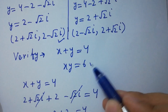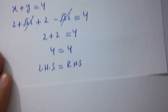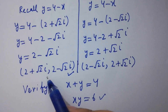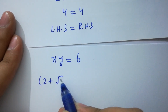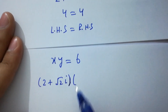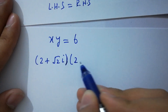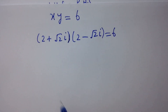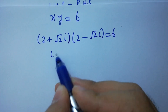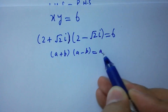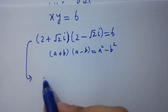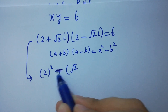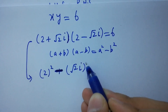Now verifying x times y equals 6: x times y equals (2 plus square root of 2i)(2 minus square root of 2i). This is of the form (a plus b)(a minus b) equals a squared minus b squared. So we have 2 squared minus (square root of 2i) squared equals 4 minus 2i squared equals 4 minus 2(minus 1) equals 4 plus 2 equals 6.